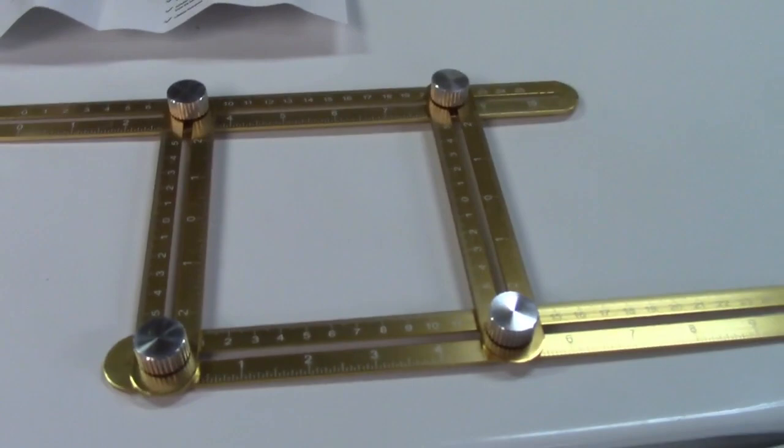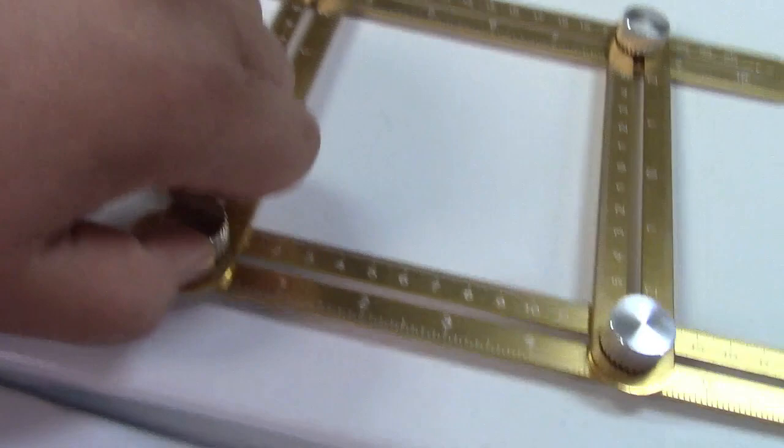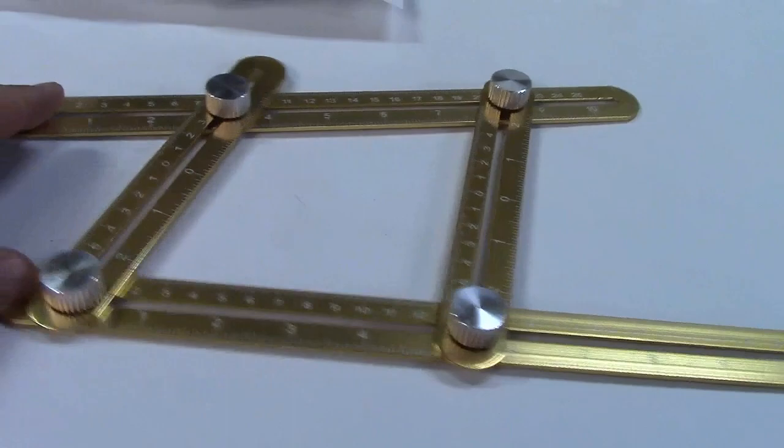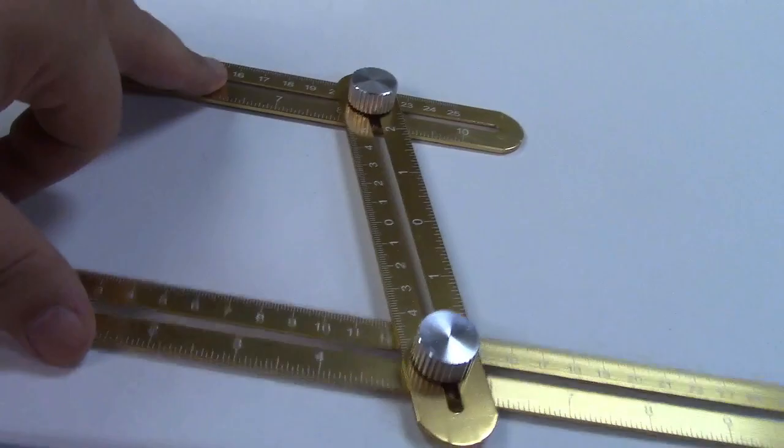You see it can be opened up like this. All of the thumbscrews are knurled, so they're really easy to grab and turn. With everything loose, you can see how it can be adjusted to many different angles to measure things.